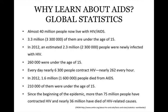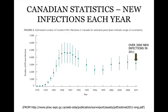Since the beginning of the epidemic, more than 75 million people have contracted HIV and nearly 36 million have died of HIV-related causes. Canadian statistics show about 3,000 new infections per year since about 2002.